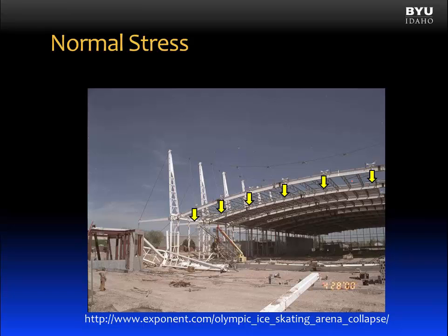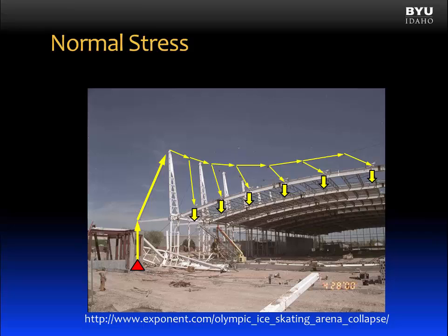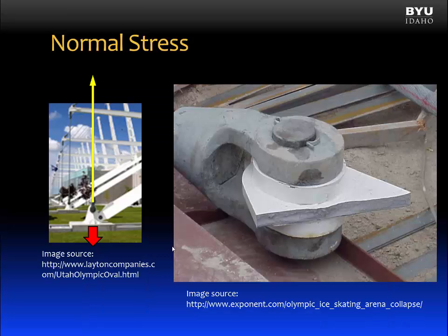This roof has a load — it's heavy — and it needs to be resisted. The cables shown here are resisting that load. We can follow the load path up the cable, up and over the tower, and down to an anchor. That anchor is then attached with some foundation to the ground. So it's fascinating to think that out here, this anchor, several feet away from the structure, is holding the weight of the roof.